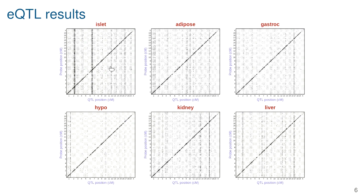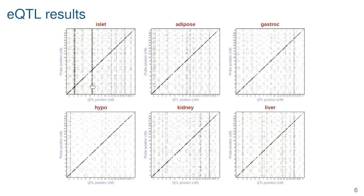I'm interested in primarily two questions. One: if I look at one of these hotspots, can I narrow in on the causal gene causing that effect? Second: can I tell if it's really one thing there or multiple things? The chromosome 6 band in islet seems like a much more precise line than the chromosome 2 band, which seems more like a smear. Is that because there are multiple things at that location? Those are the two questions I'm trying to answer.